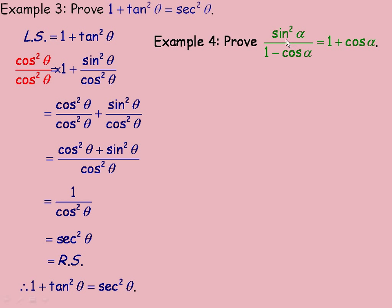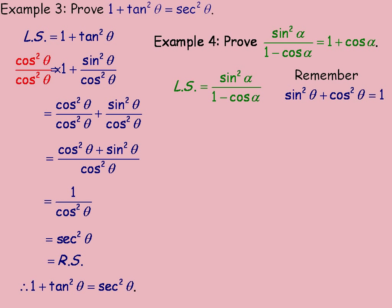In example four, we're asked to prove that sin²α / (1 - cos α) equals 1 + cos α. The left side is the larger, more complicated side, so we start there. The strategy is factoring, and we also need the identity sin²θ + cos²θ = 1. Rearranging, sin²θ = 1 - cos²θ, or sin²α = 1 - cos²α. So we substitute 1 - cos²α in place of sin²α in the numerator.